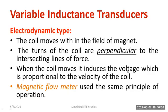When the coil moves, it induces a voltage which is proportional to the velocity of the coil. You know the working of a DC generator — Faraday's laws of electromagnetic induction — the same thing can be applied here. You can also calculate the total force generated in the magnetic field. The magnetic flow meter works based on electrodynamic type variable inductance transducer, and this same principle applies.